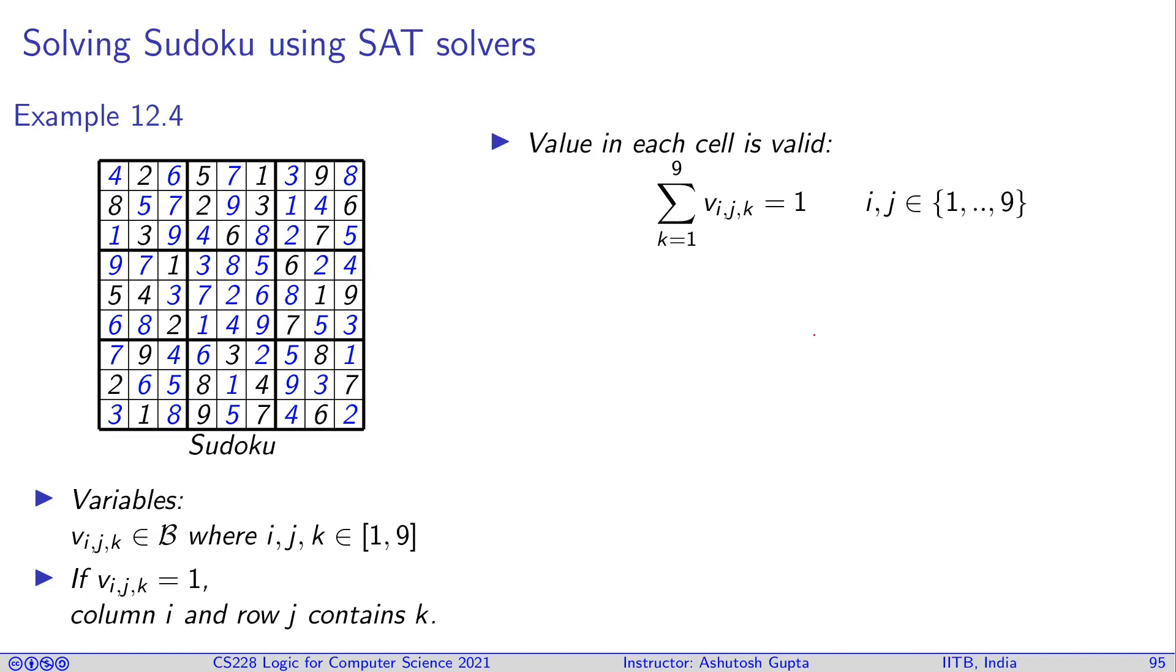So for each cell, we need to have this constraint that exactly one k is 1. In every cell i and j, you need to have exactly one k for which v_ijk is true. So that is encoded by summing this equals to 1. We have seen how to encode cardinality constraints, so therefore we know how to encode these things.